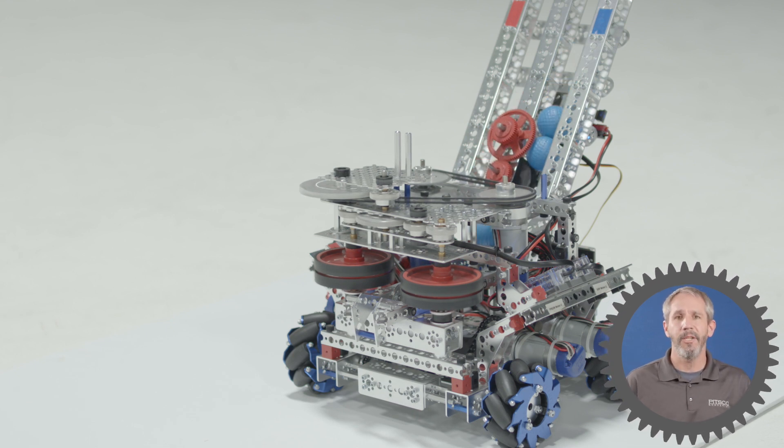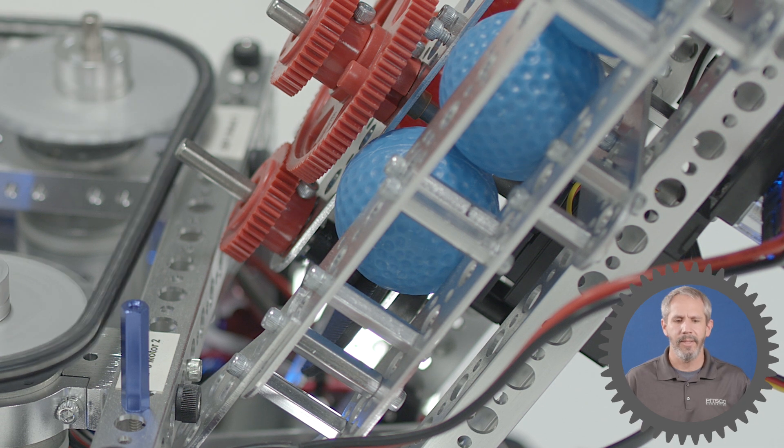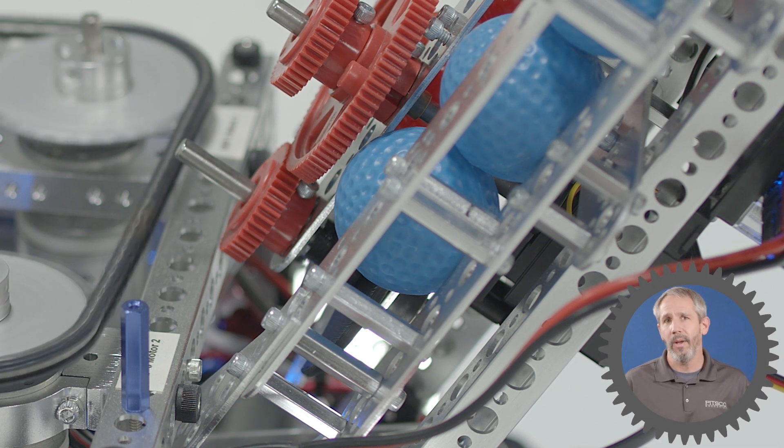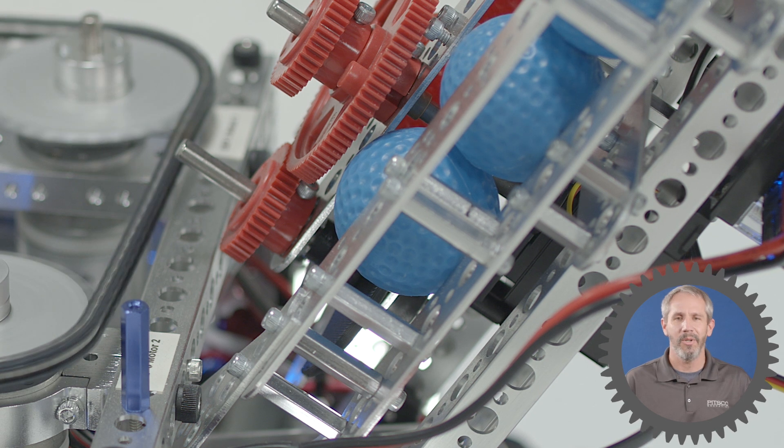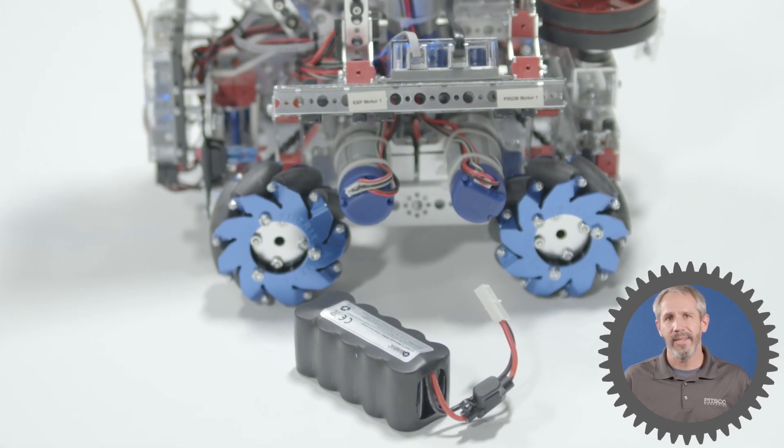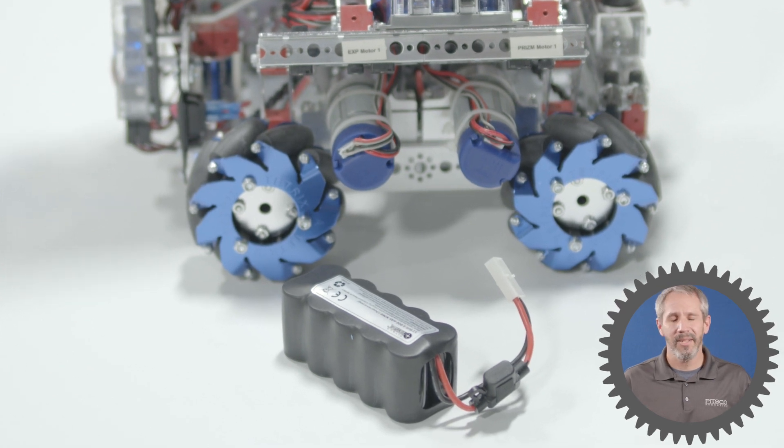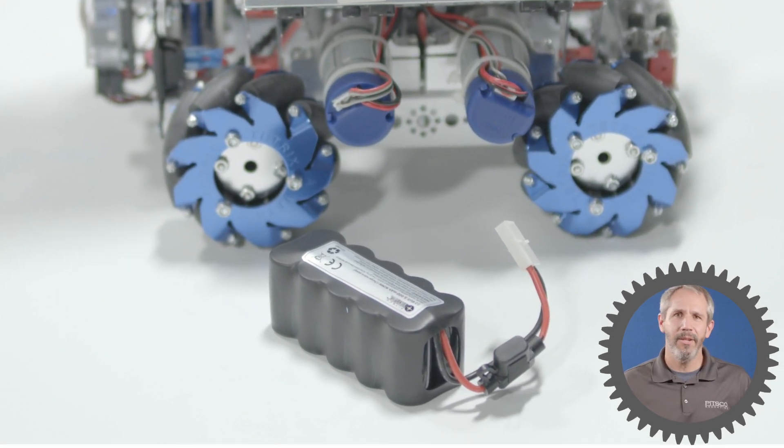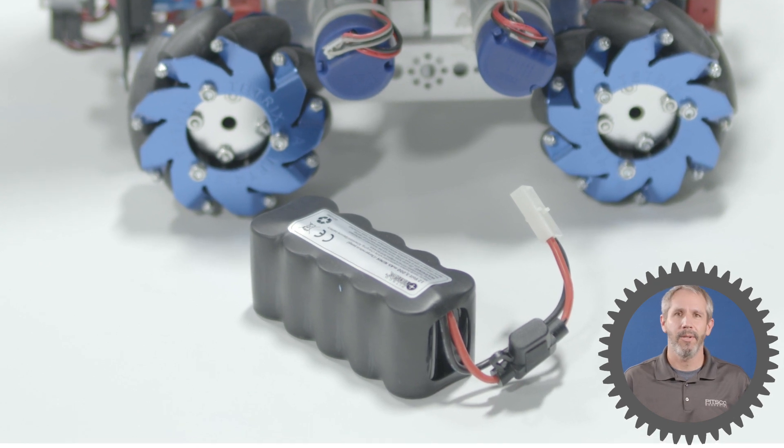But there are some disadvantages to using a flywheel system like this. One is that it really only shoots round objects like these golf balls that we're shooting here. Another disadvantage is that as the battery wears down, then the motors tend to slow down and so that can affect your accuracy unless you're driving your motors with encoders.